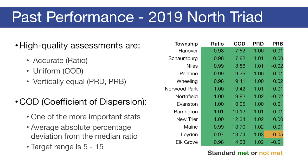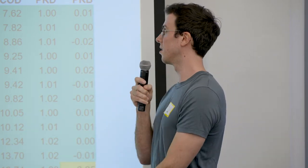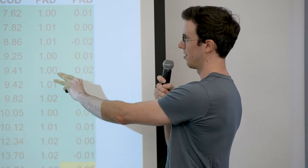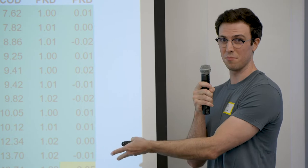Assessors are mainly concerned with COD, and there is a target range set by a standards body that's between five and 15. This is all the performance from 2019, and you can see that generally in the north triad we did very well. Green means we met the stat, yellow means we didn't, and we have this one here which is very close, but otherwise met everything. CODs are quite low.